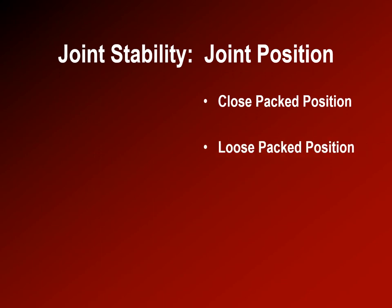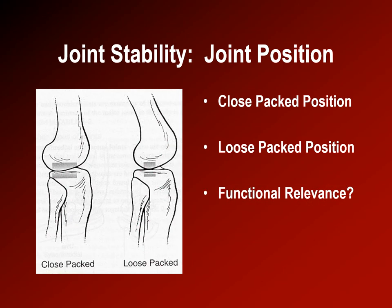Open or loose pack is the opposite — most ligaments are lax and the contact between joint surfaces is smaller. In the drawing of the knee, the close-pack position demonstrates maximum joint congruence and maximum contact between the tibia and femur. The loose-pack position is with the knee flexed about 20 degrees, where there is relatively small joint surface contact.